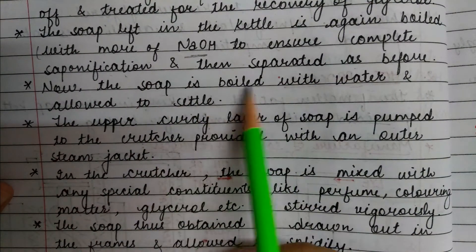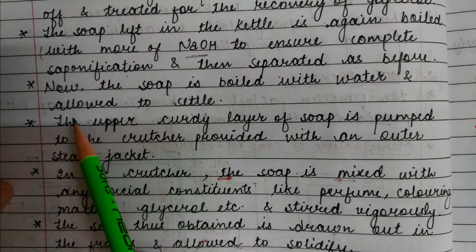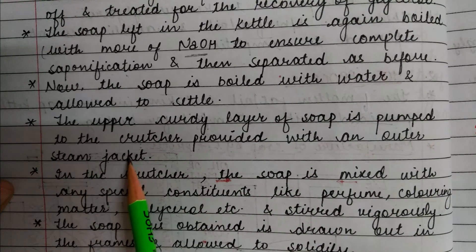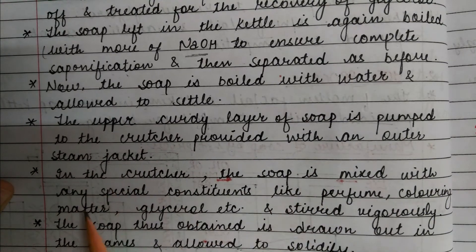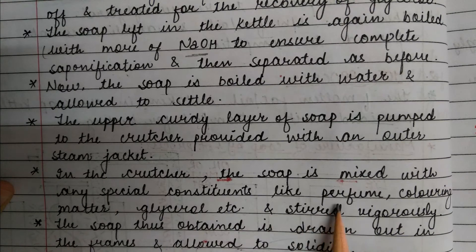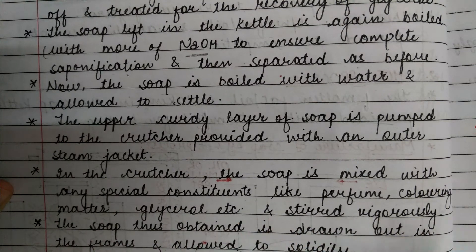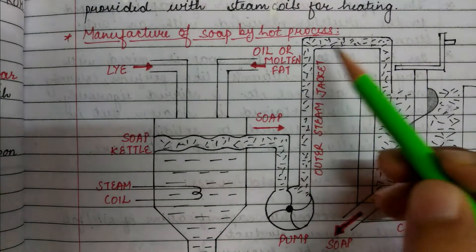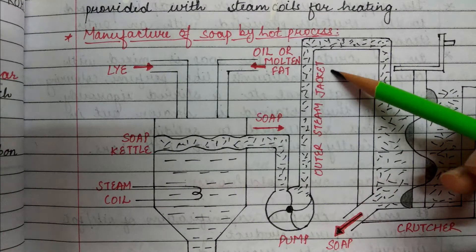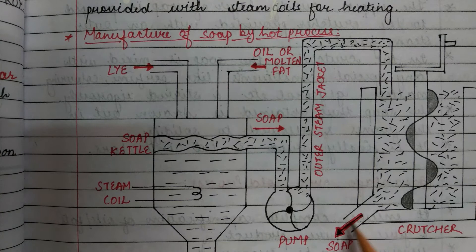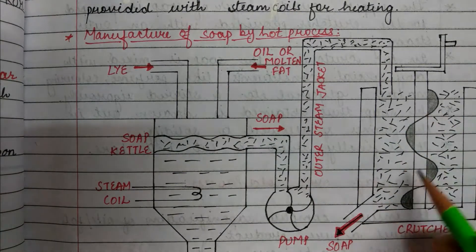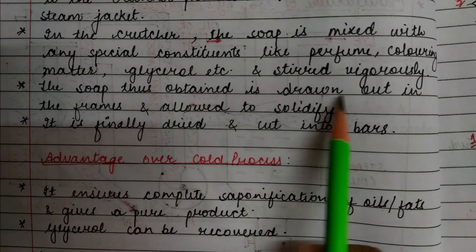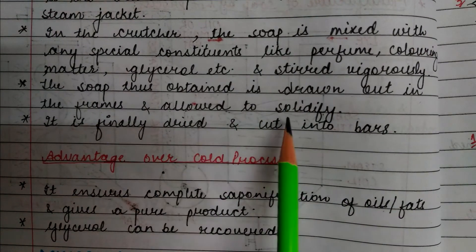The soap is then boiled with water and allowed to settle. The upper layer of soap is pumped to the crutcher, which is provided with an outer steam jacket. In the crutcher, the soap is mixed with any special constituents like perfume, coloring matter, or glycerol, and stirred vigorously. The soap obtained is drawn out into frames and allowed to solidify.